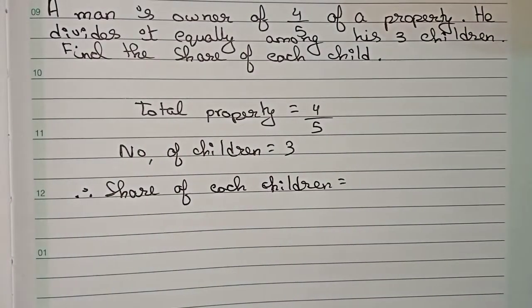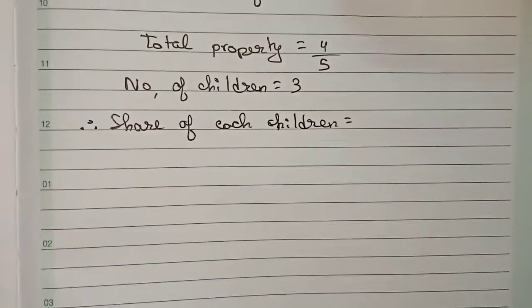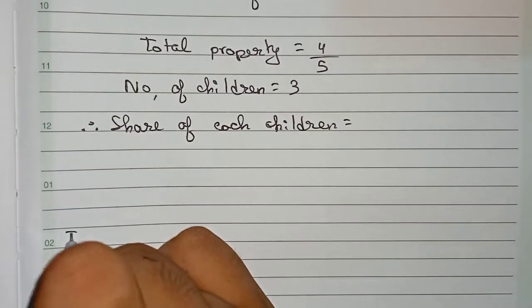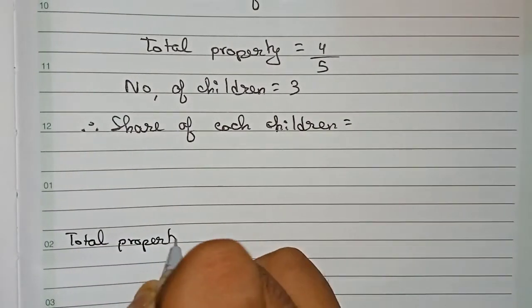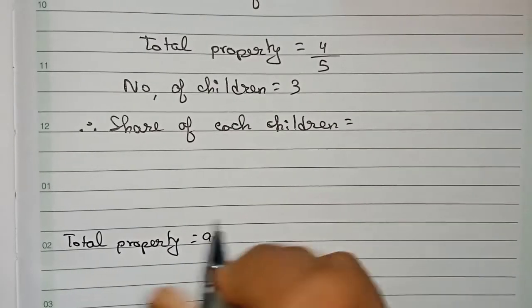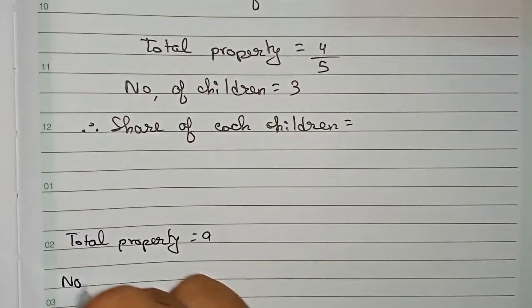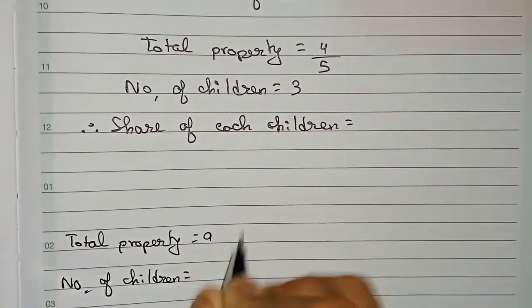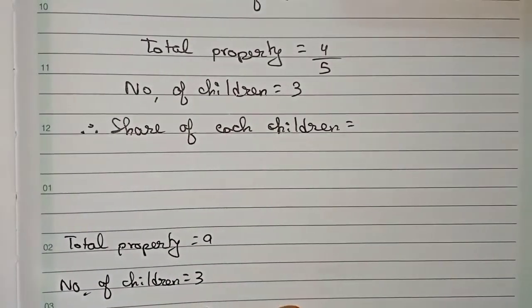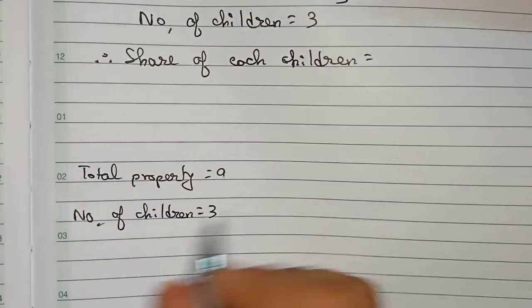To find the share of each child, we take a simple example first. We write the total property, let it be 9. Number of children, we take it as three only. So now you can easily understand.